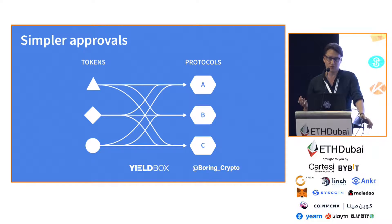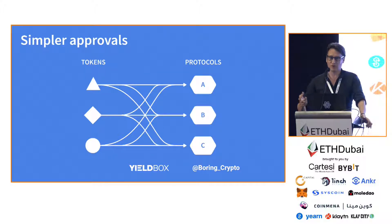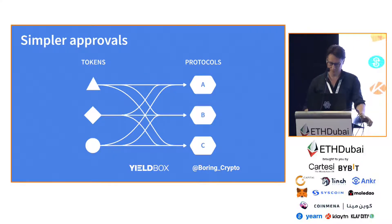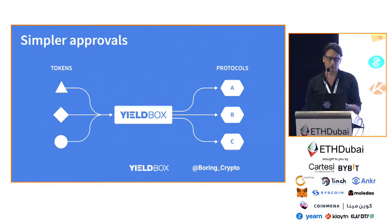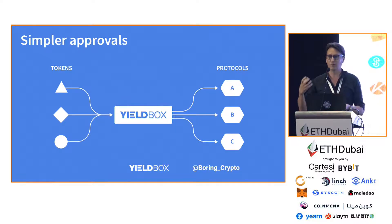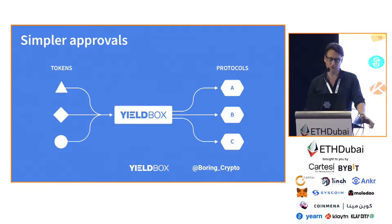Another benefit for users is simpler approvals. Most of you spend a lot of time doing approvals — every time you have a new protocol or a new token, you have to approve, approve, approve. With Yieldbox, you approve your tokens once to the Yieldbox, and when you have a new protocol you want to use all your tokens in, you just approve that protocol once and it has access to all your tokens.